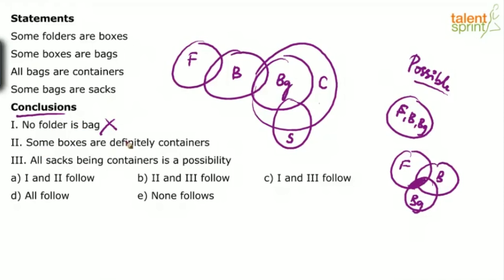Conclusion 2: Some boxes are definitely containers. The word 'definitely' adds no extra meaning here, since there are two types of conclusions — definite and possibility type. A possibility conclusion would explicitly state 'possibility.' Otherwise, it is a definite conclusion anyway. So 'some boxes are definitely containers' and 'some boxes are containers' mean the same thing. Is this true? Yes. All bags are containers, so bags can be replaced with containers — some boxes are bags, therefore some boxes are containers. This will always be true in any diagram. Conclusion 2 follows.